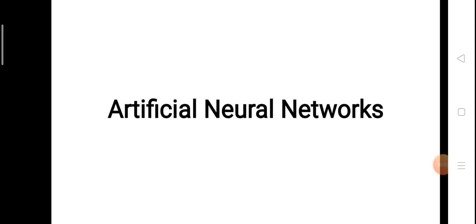Hello viewers, today we will discuss artificial neural networks. In the last video we discussed the basic concepts of neural networks, and we left off at the point that in the next video we would discuss how neural networks can be implemented or simulated in the field of computer science and artificial intelligence to perform functions which humans perform better than conventional digital computers. The answer was artificial neural networks, so in this video we will discuss that concept. Let's go to the introduction.